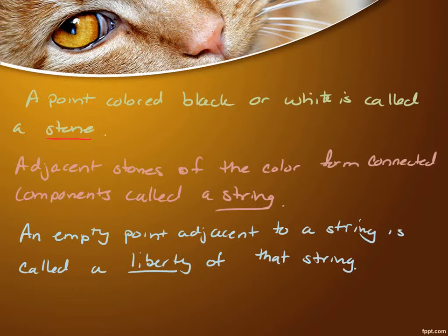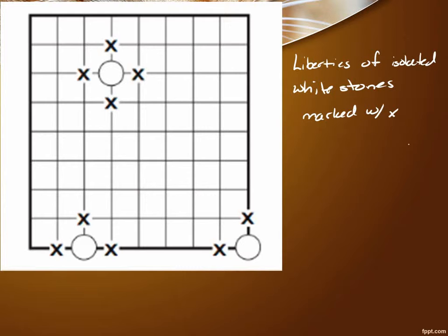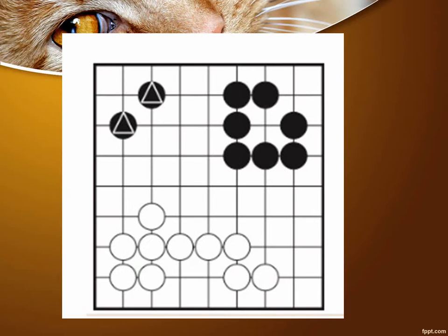In the video, they were talking about liberties of a stone — places where the other stones can go. Here's an image: the crosses represent liberties of an isolated white stone, marked with X. Notice that at i+1, j+1, it could be down in the corner, and you don't have the bottom liberty because it's off the graph paper. In the bottom corner, you only have two liberties. Strings are all adjacent and connected, and the string itself can have liberties.